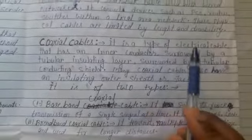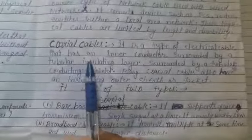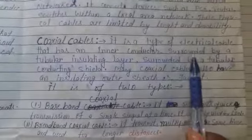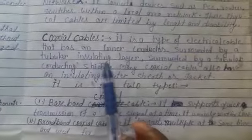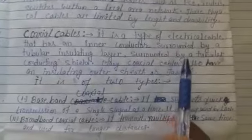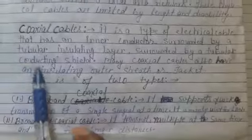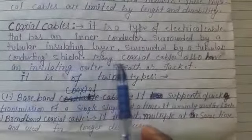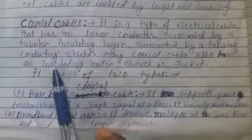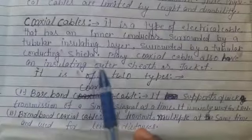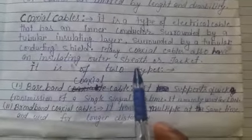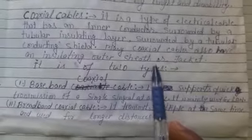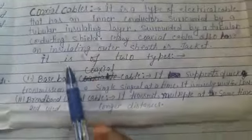Coaxial cable is also a type of cable. It is a type of electrical cable that has an inner conductor surrounded by a tubular insulating layer, which is in turn surrounded by a tubular conducting shield. Many coaxial cables also have an insulating outer sheath or jacket — meaning the cable has a protective cover. It is of two types.